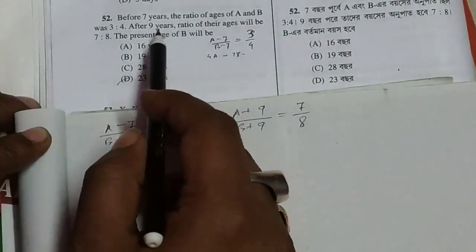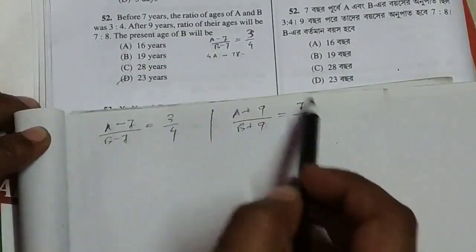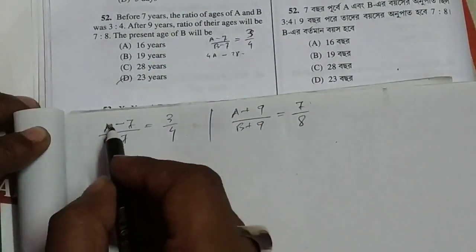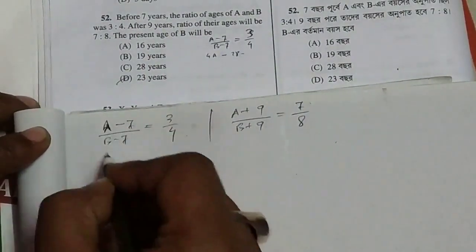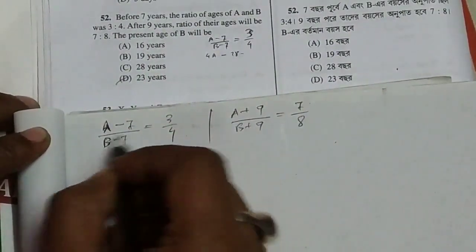After 9 years, A plus 9 by B plus 9 equals 7 by 8. We set up two equations for present ages of A and B, then solve the simultaneous equations.